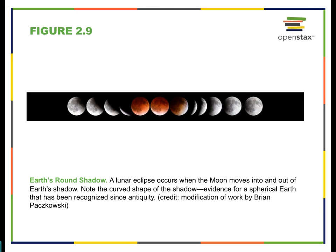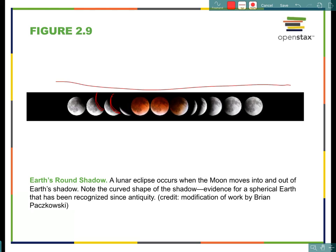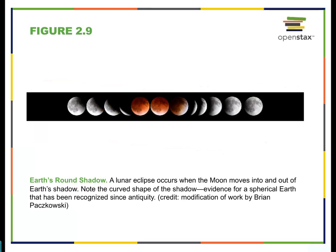Now let's talk about shadows. Earth has a round shadow, evidenced by the fact that when you look at lunar eclipses and Earth's shadow passes over the Moon, we can see its curvature. The shadow is not rectangular — Earth is not flat or disc-shaped. We can clearly see the Earth must be spherical because of the way it casts a shadow on the Moon. Even ancient astronomers took this as evidence of a spherical Earth.